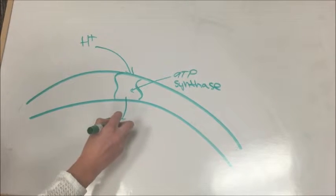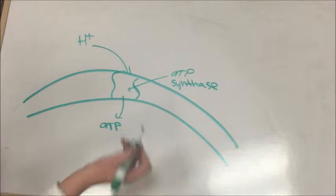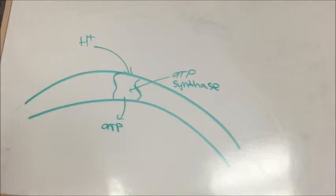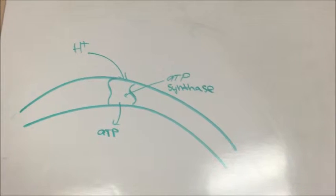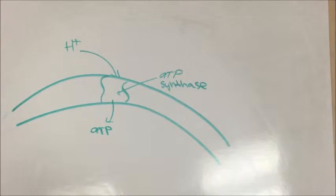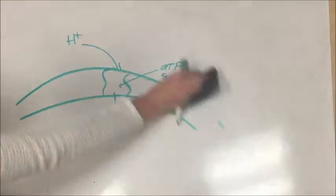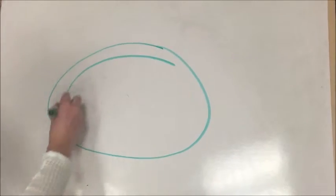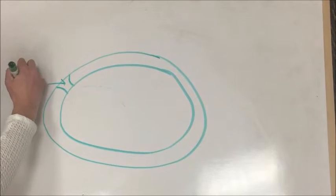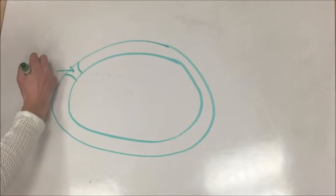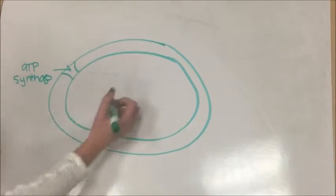Like all diffusion, protons will diffuse from areas of high concentration to areas of low concentration. Because of the electron transport chain, this is exactly what happens. In order for protons to flow from the higher concentration in the intermembrane space to low concentration in the mitochondrial matrix, they must pass through what is called an ion channel. In this case, F1 ATP synthase acts as the ion channel and provides facilitated diffusion through the intermembrane space to the mitochondrial matrix.